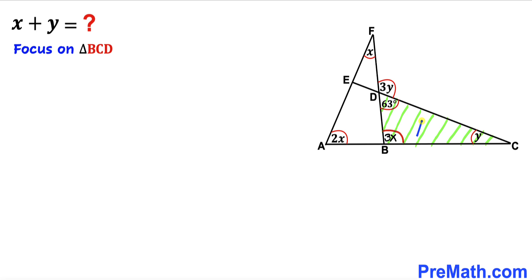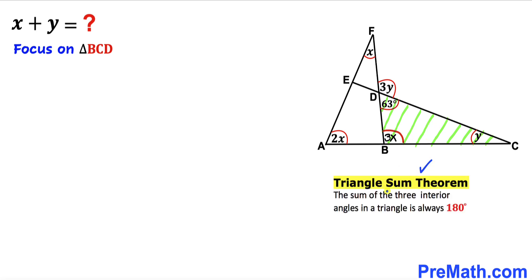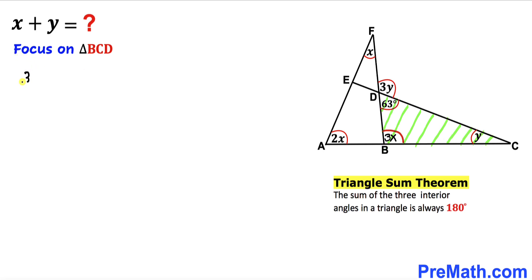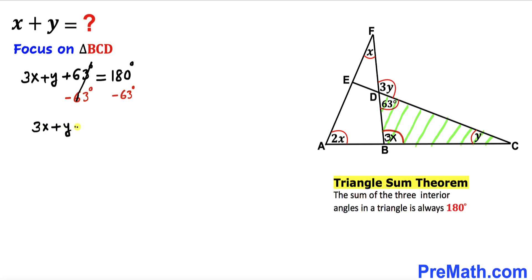Now let's focus on triangle BCD and recall the triangle sum theorem: the sum of three interior angles in a triangle always equals 180 degrees. So in this triangle, 3x plus y plus 63 degrees equals 180 degrees. Subtracting 63 degrees from both sides gives us 3x plus y equals 117 degrees. Let's call this equation number one.